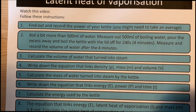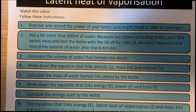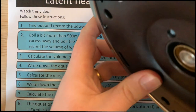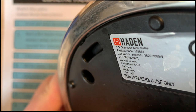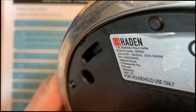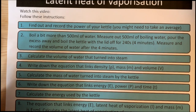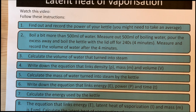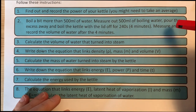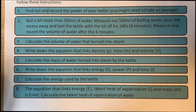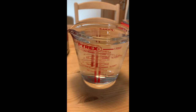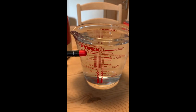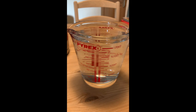I'm going to follow the instructions now. First, find and record the power of the kettle — it's written on the bottom, so we do this when the kettle's empty. My kettle has a range between 2520 and 3000 watts, so I take an average by adding them and dividing by two. Step two: boil more than 500 millilitres of water — a bit extra for now.